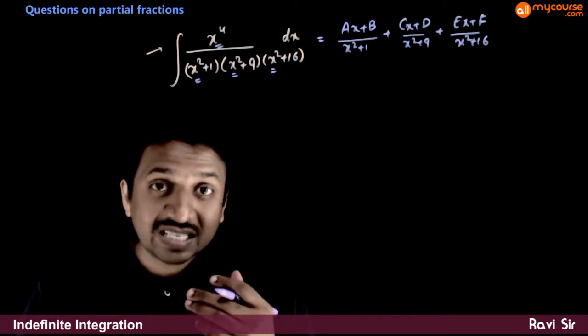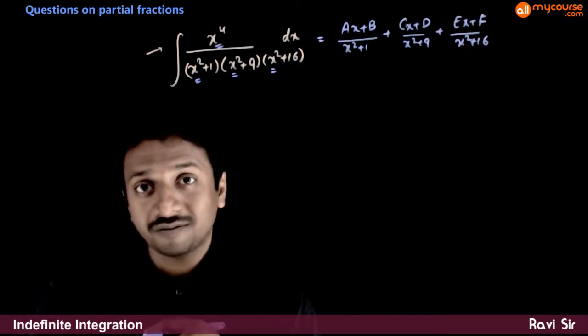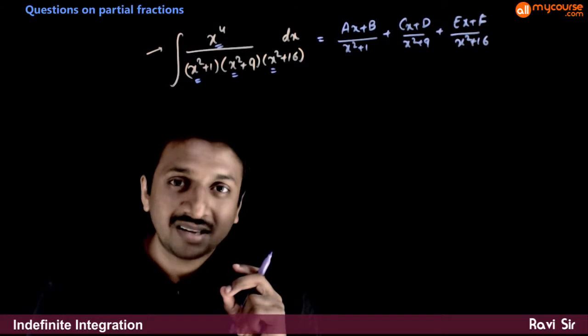You have 6 unknowns, you have 6 equations. It's very difficult to solve. So here we use slight manipulation.